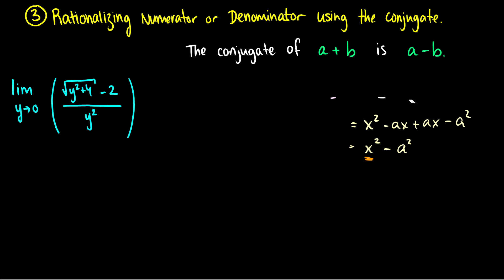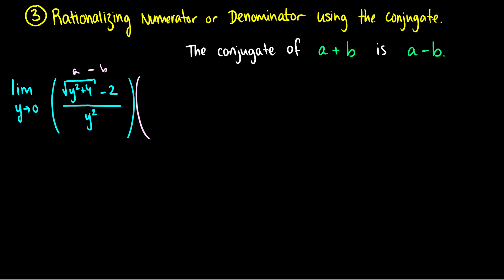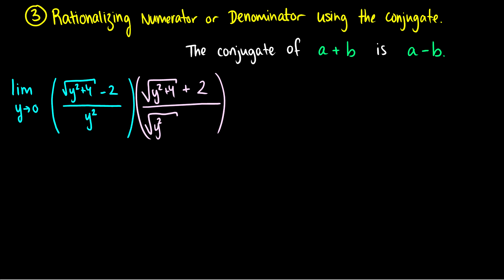Let's multiply it by the conjugate. We take two terms, call them a and b — this is a minus b in this case — so we multiply by a plus b, which is the square root of y squared plus 4 plus 2 instead of minus 2. That's the conjugate. Of course, we have to multiply the whole thing by one, so we multiply both the top and bottom by the same thing — this is just the same as multiplying by one.